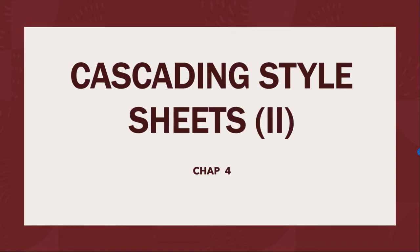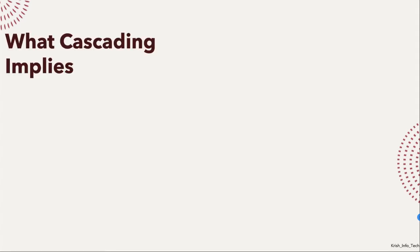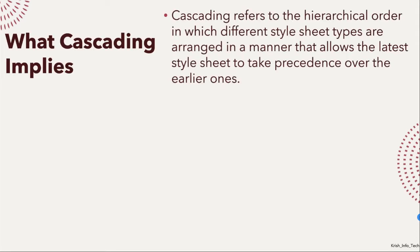So let us start with what cascading style sheet implies. Cascading is nothing but a hierarchical order. As I said in the previous video, we are going to set a permanent style for a particular tag. Wherever we use that tag, the attributes given in the cascading style sheet will be applied automatically to that part of the web page. That is the use of cascading style sheet.